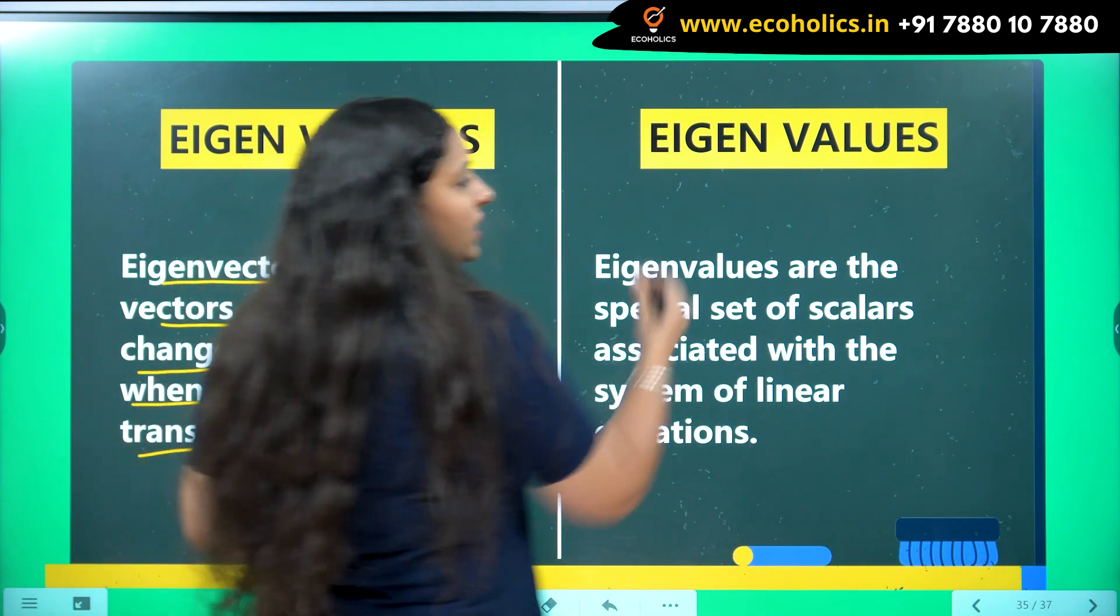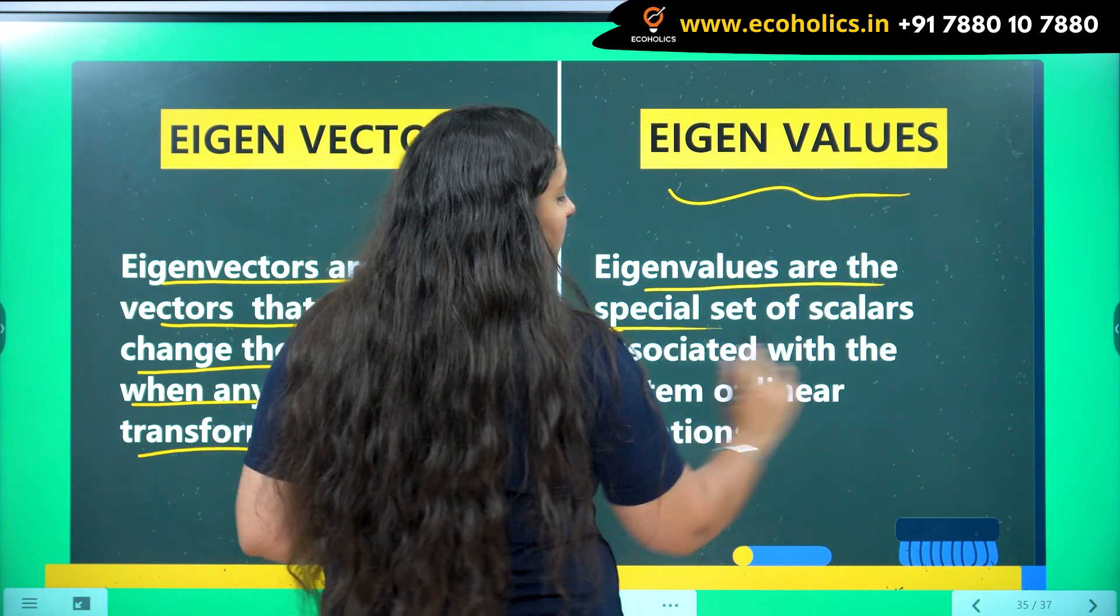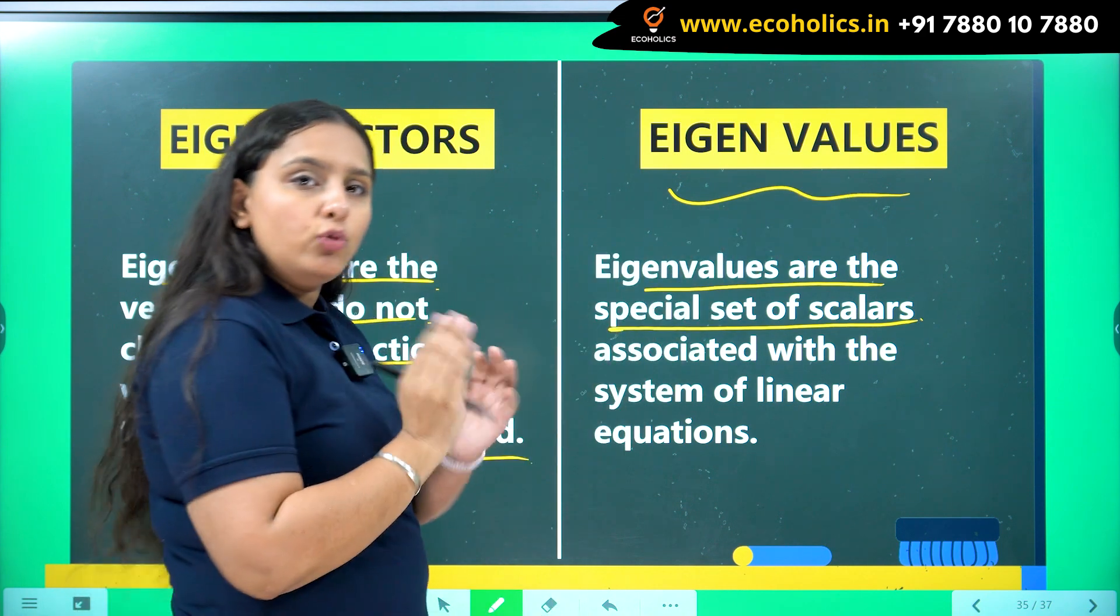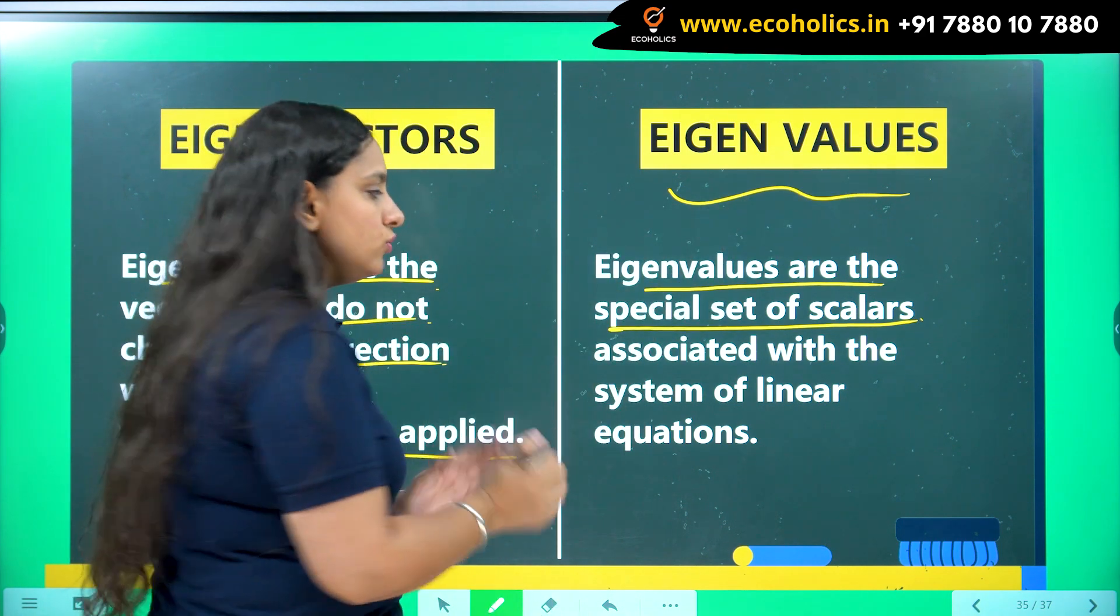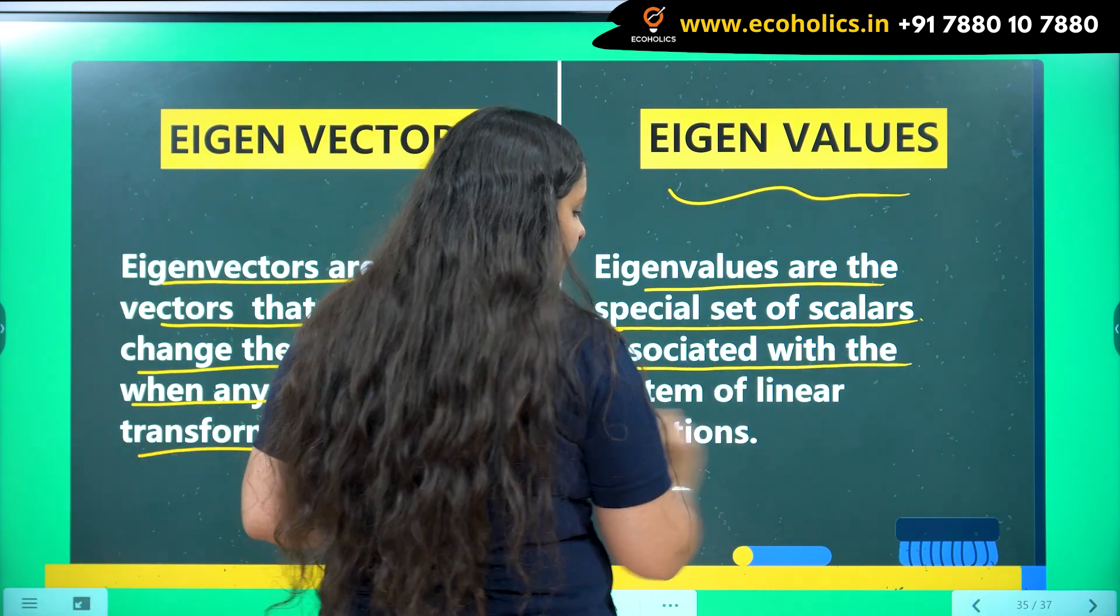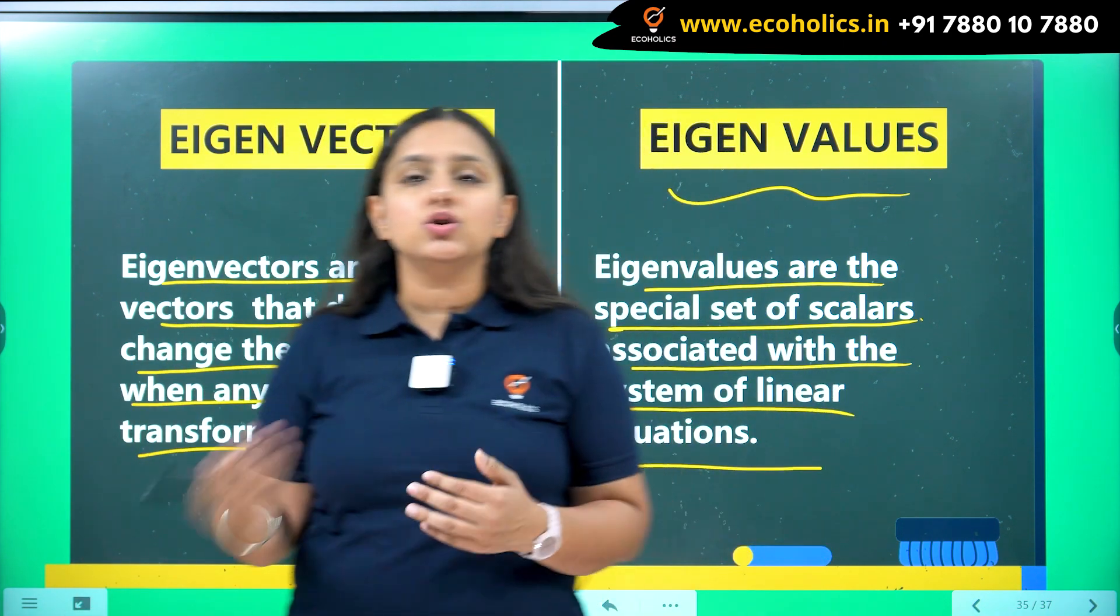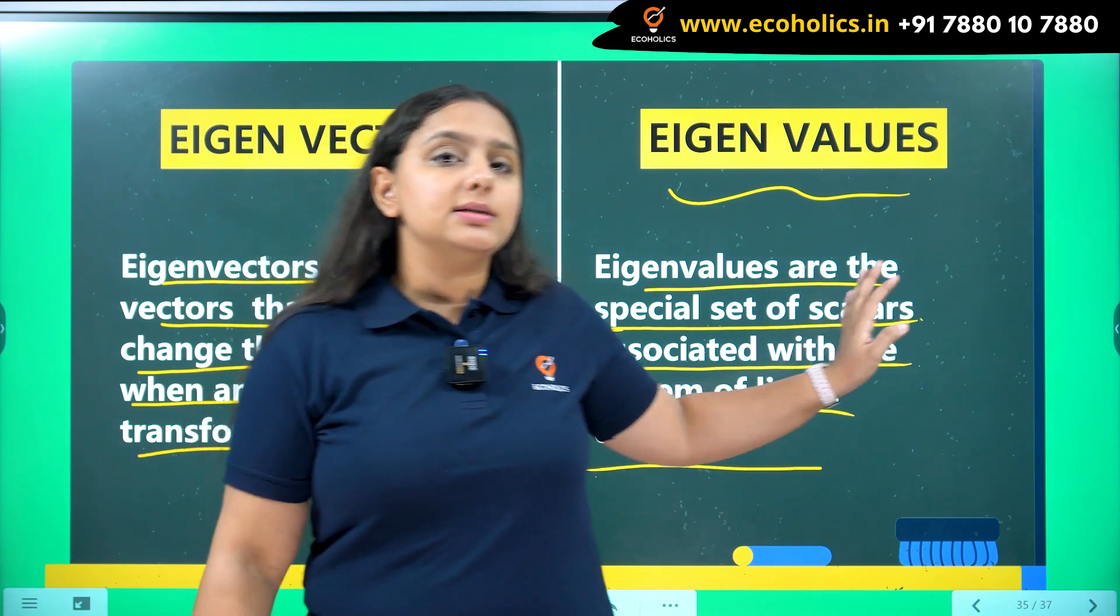And what about eigenvalues then? Eigenvalues are the special set of scalars. So eigenvalues, as the name suggests, they are going to be some scalars, some values associated with the system of linear equations. So the linear transformation you are doing, the equations you are going to use there, they are the scalars here.